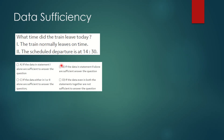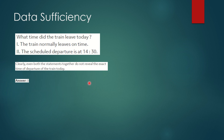Next question: what time did the train leave today? Statement 1 says the train normally leaves on time — this is very vague and doesn't answer the question. Statement 2 says the scheduled departure is at 2:30, but it's unclear which date this refers to. Both statements are also vague when combined. Since we cannot establish the exact departure time for today using either or both statements, the answer is option D — the data is insufficient.